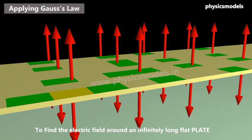In this video I want to explain how to apply Gauss's law to finding an electric field value for an infinitely long charged plate. The plate is shown in yellow color, which is infinitely long and charged positively. You can see arrows coming out of the plate on the top surface going upwards, and on the bottom surface the arrows come out perpendicular and go downwards.